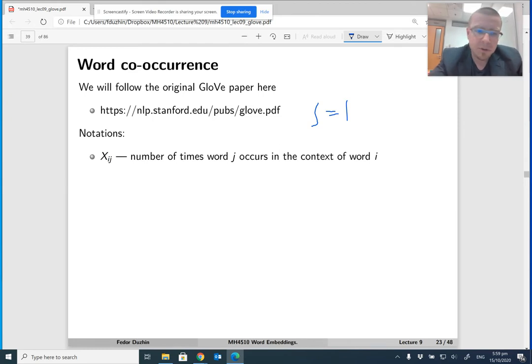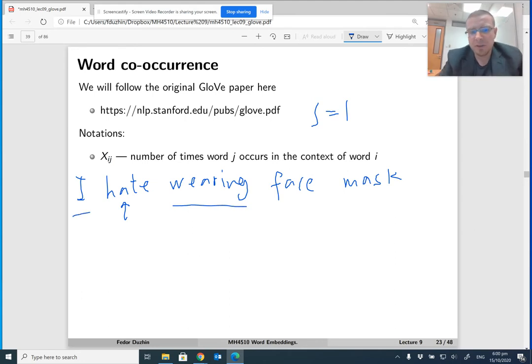So let me give you an example. So if my document is I hate wearing face masks, right? Then with the window size 1, let's say if the main word is hate, then the context is whatever is at the distance of at most 1 word from hate. So at most 1 means that it's next to hate. So then words wearing and I are in the context of word hate if the window size is 1.